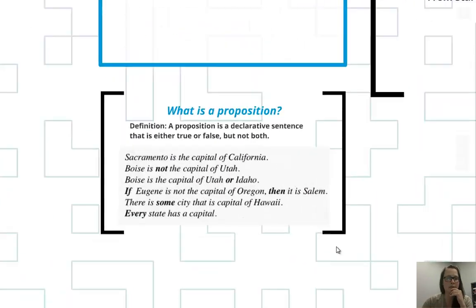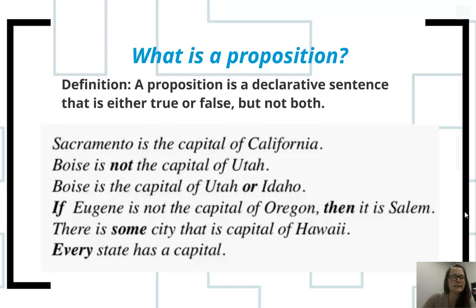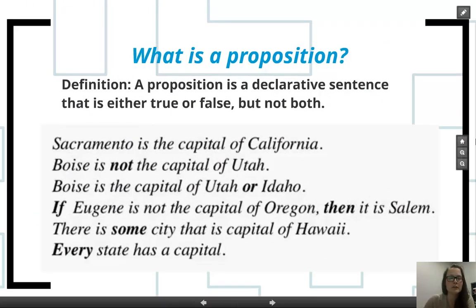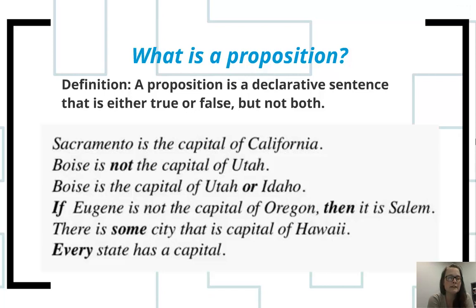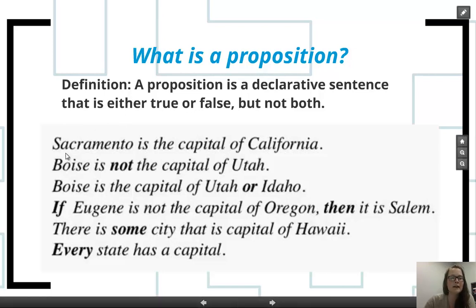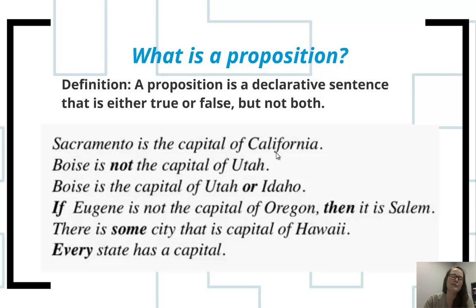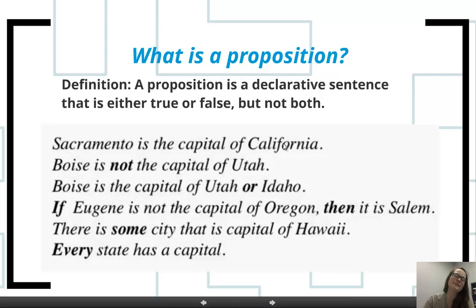A proposition is a declarative sentence. It's either true or false, but not both. We need to be able to look at the sentence and make sure that it's declaring something and that we can check to see if it's true or false. For example, Sacramento is the capital of California. I can go and Google the capital of California if I don't know and see whether that statement is true or false. This one happens to be true.